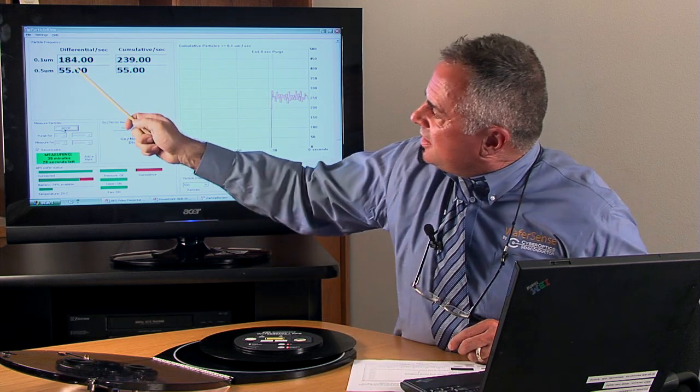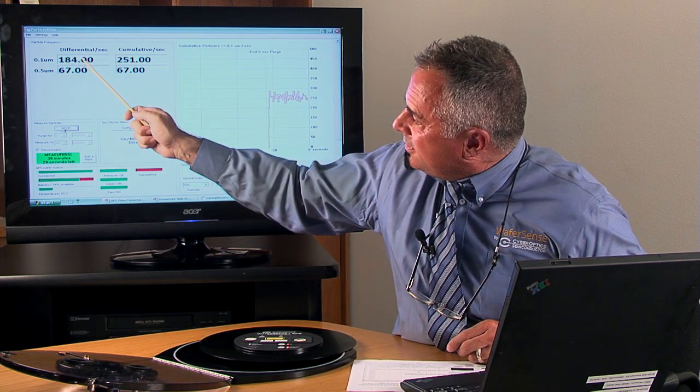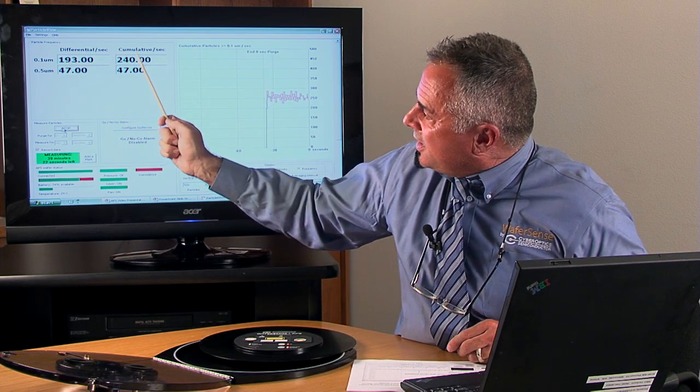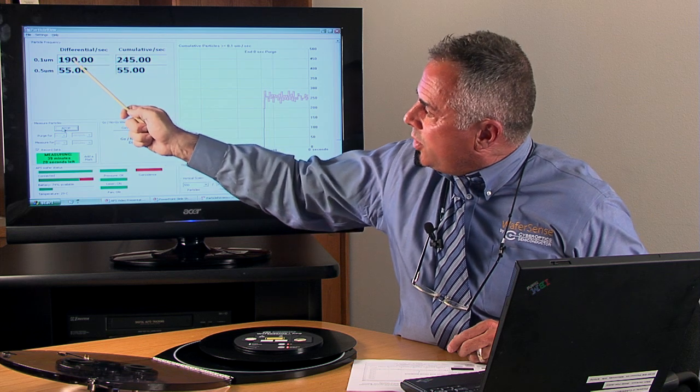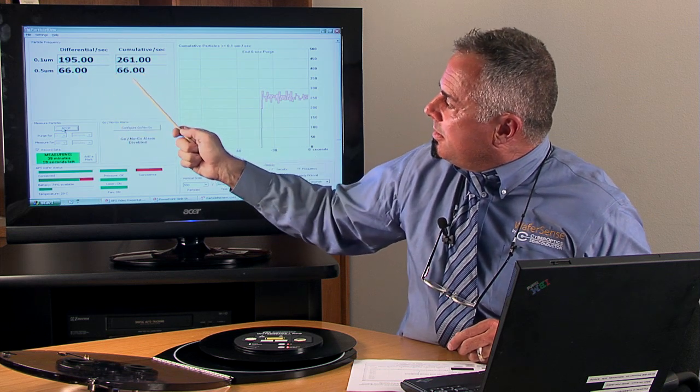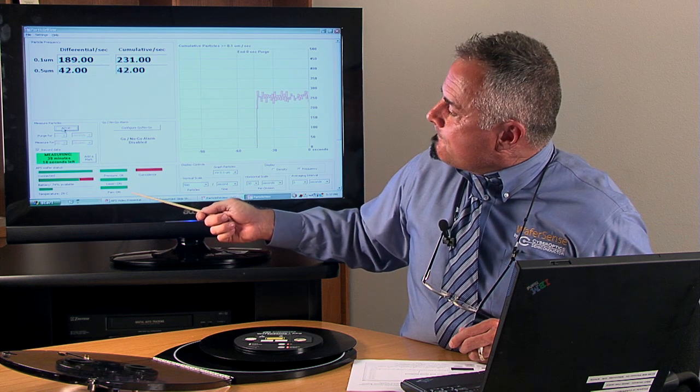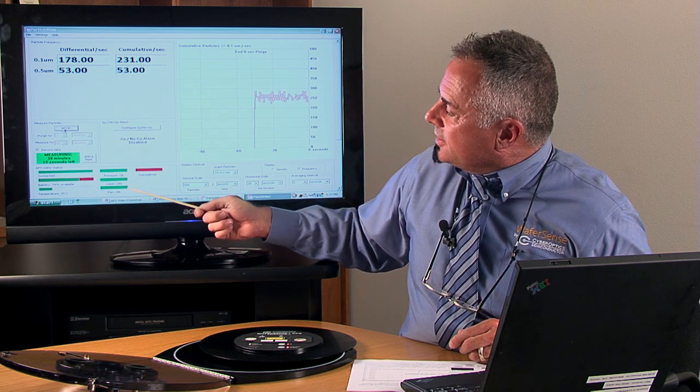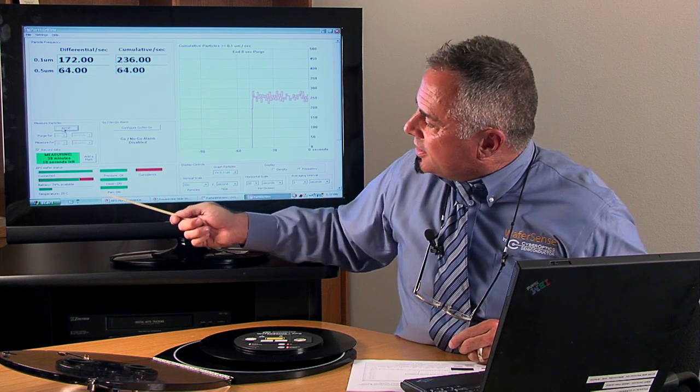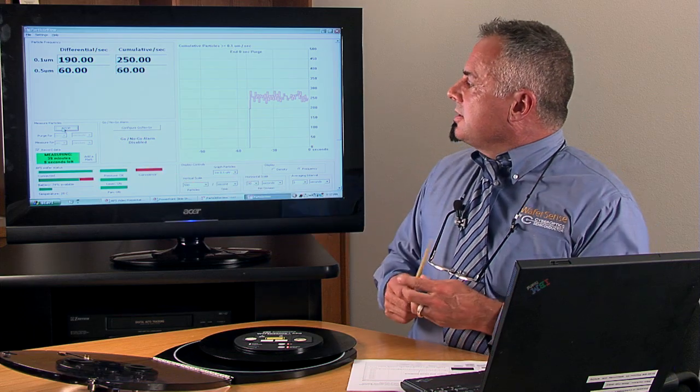Over here, you will see our differential and cumulative counts in both the 0.1 and 0.5 micron bins. So we have some indicators here, pressure, laser, fan, coincidence alarms, battery status, etc.